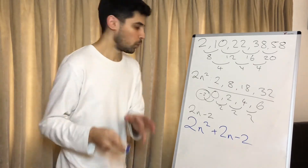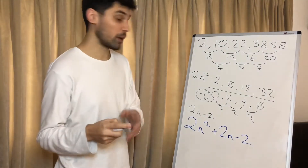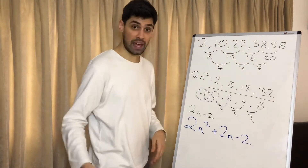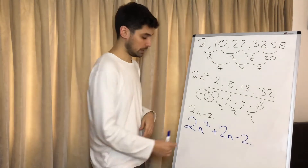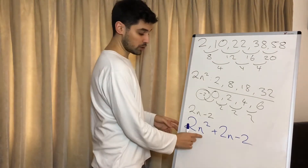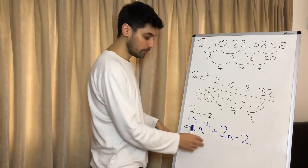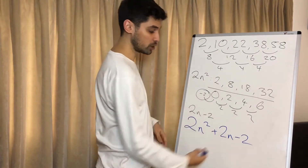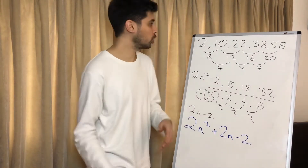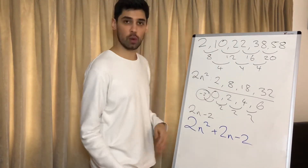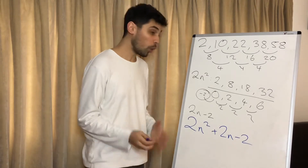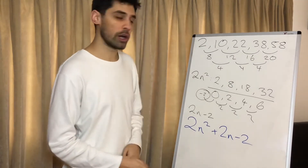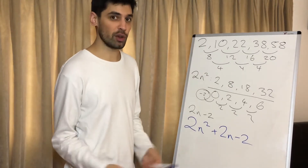What we can do to check — and I think this is a really good idea — is plug in 1 for n just to check we get the right answer. 1 squared is 1, times 2 is 2, plus 2 is 4, take away 2 is 2. So we get the first term correct, which gives us an almost certainty that we are on the right lines and we've got the right answer.